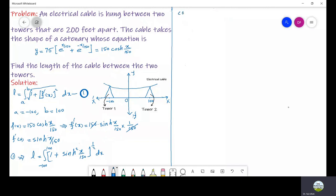Now let us recall that cosh squared theta minus sinh squared theta equals 1. Using this formula we get L equals integration from minus 100 to 100 where 1 plus sinh squared is equivalent to cosh squared (x/150).